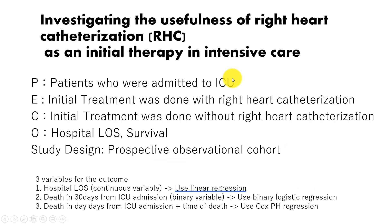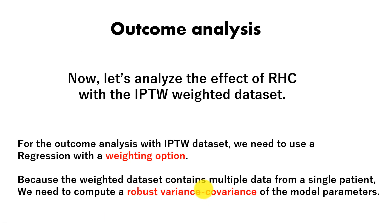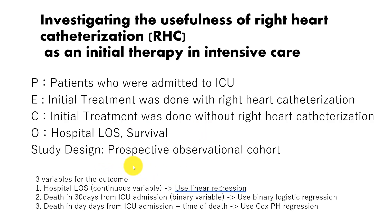The outcome variables we are going to analyze are hospital length of stay and survival. There are three variables for the outcome. The first outcome is hospital length of stay, which is a continuous variable. We use linear regression in the usual case, although we need to specify the weighting options, so we are going to use generalized linear regression for this.